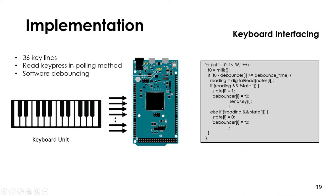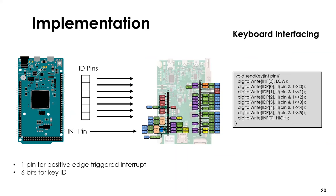The keyboard has 36 keys, and these keys are read by the Arduino DUE board using the polling method. The reason for using the Arduino DUE board is that the STM32 Discovery board did not have enough input pins available. For keypress detection, software debouncing of 100ms was also implemented on the Arduino DUE. After a keypress is detected, the DUE board generates an interrupt signal and a 6-bit binary ID of the keypress is sent to the STM32 board.